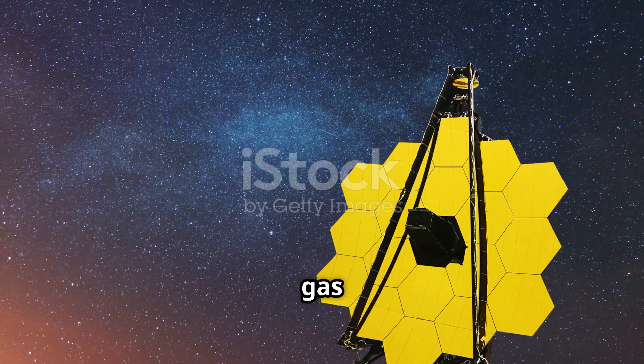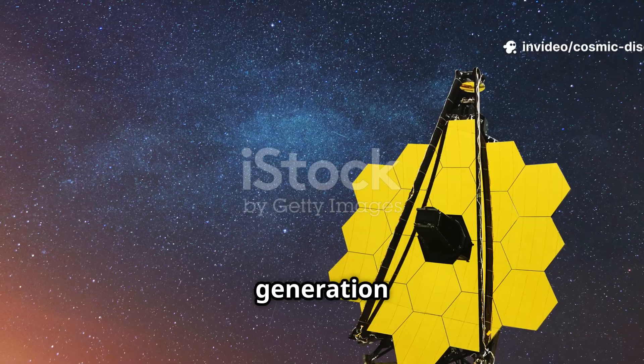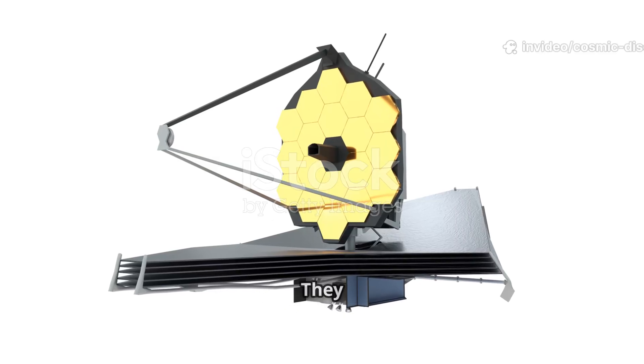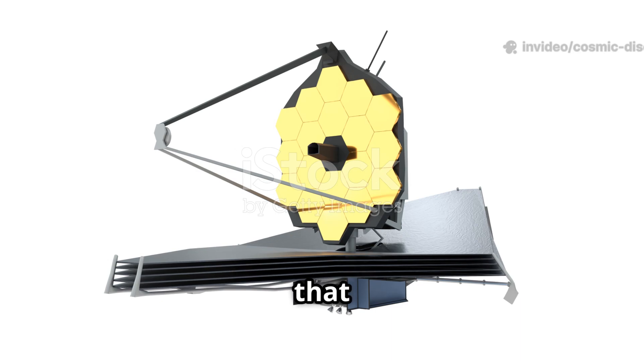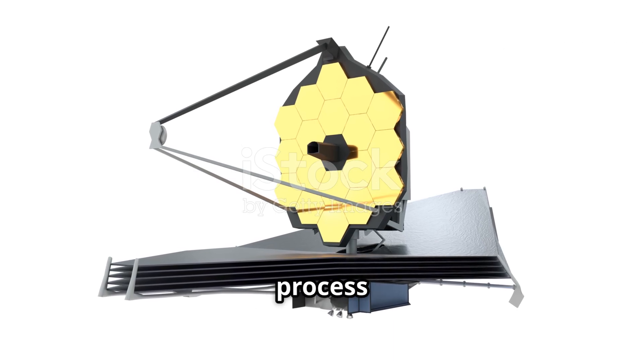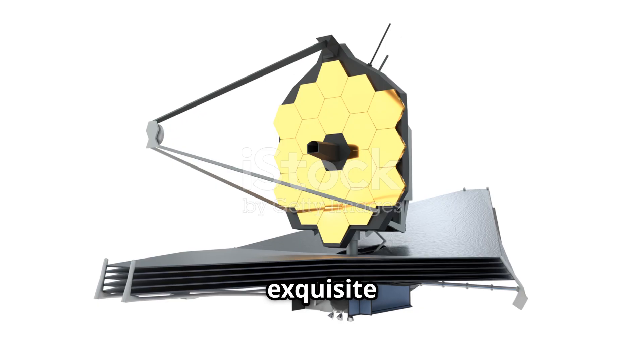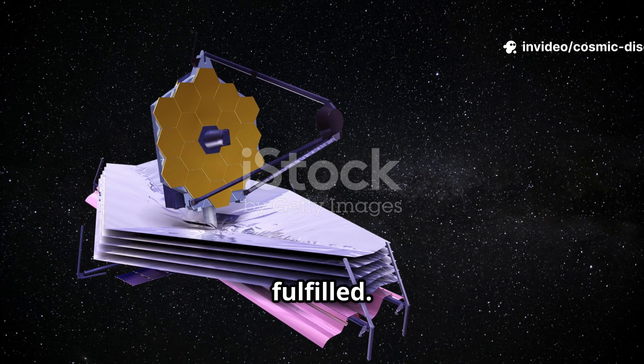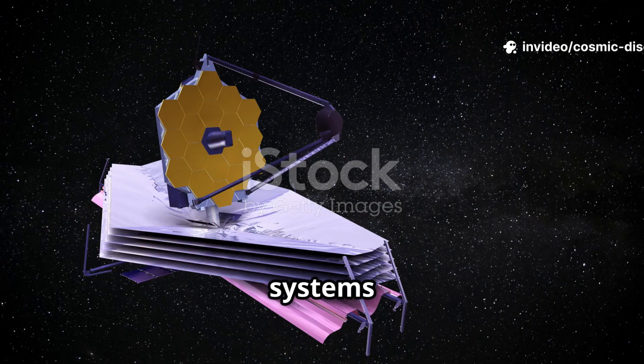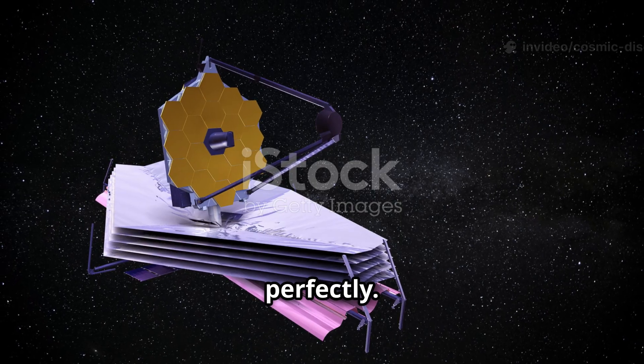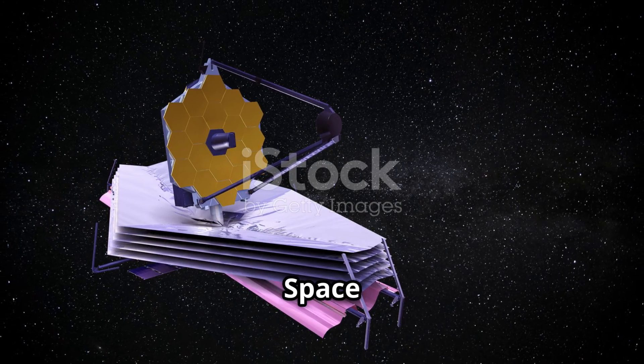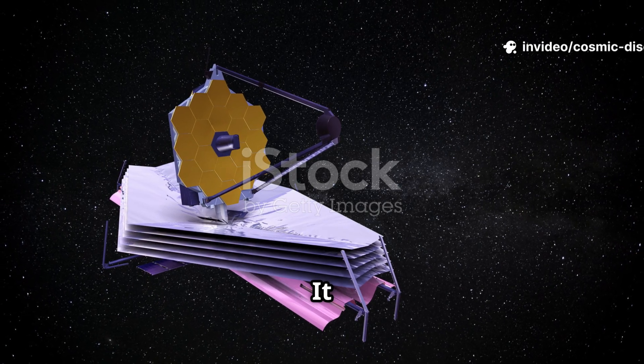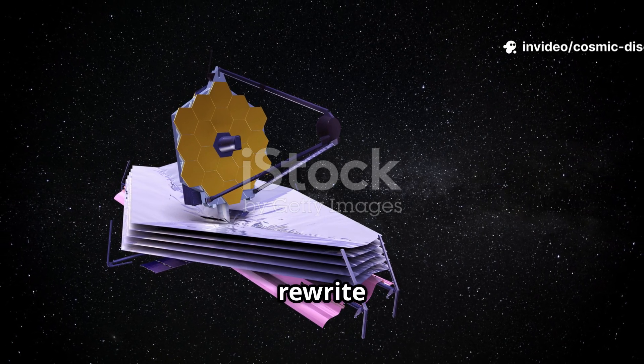These images are not just pretty pictures, they provide vital data that helps astronomers understand the complex and violent process of star formation in exquisite detail. These first images were a promise fulfilled. They showed that the telescope and all its complex systems were working perfectly. It was clear that the James Webb Space Telescope was not just going to incrementally improve our understanding of the universe, it was going to completely rewrite the textbooks.